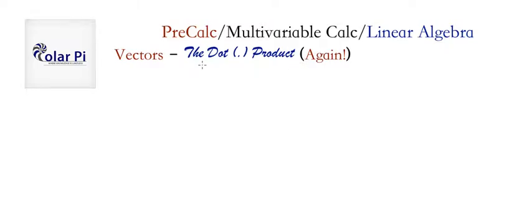Hey guys, welcome. So in our first video on the dot product, we learned that we can find the dot product between two vectors by multiplying corresponding components and then adding the results together, right?